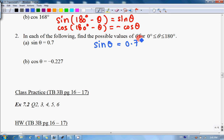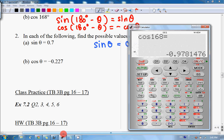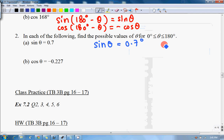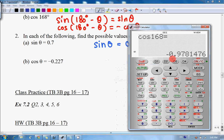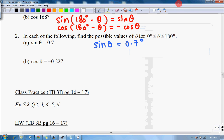If we use a calculator, as we have learned just now, we have shift sine 0.7, and we should get 44.43. So θ should be equal to 44.43 degrees, which is an acute angle.